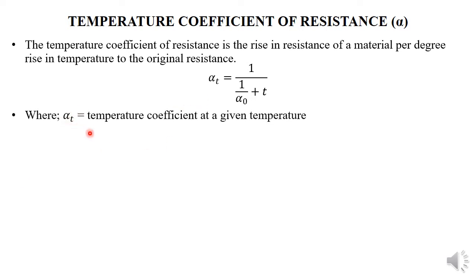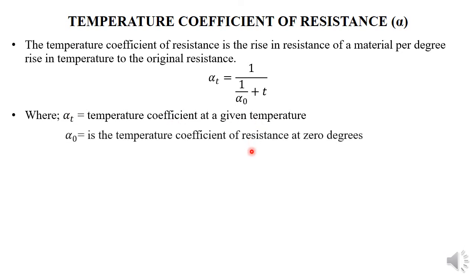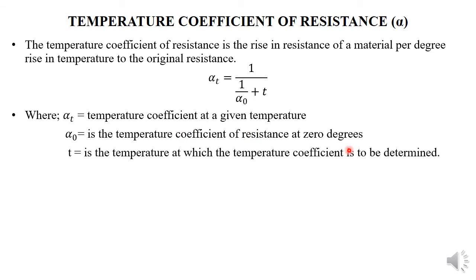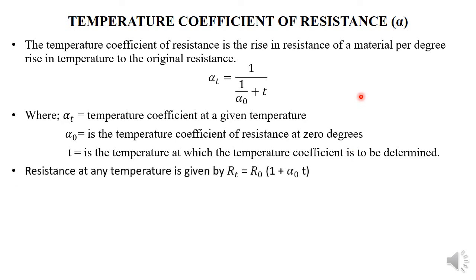In the formula, alpha_t is the temperature coefficient at a given temperature, alpha_zero is the temperature coefficient of resistance at zero degrees, and t is the temperature at which the temperature coefficient is to be determined.